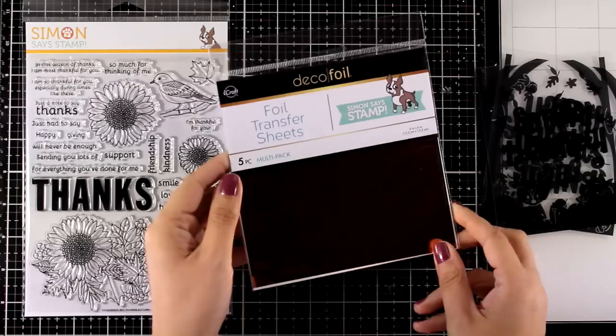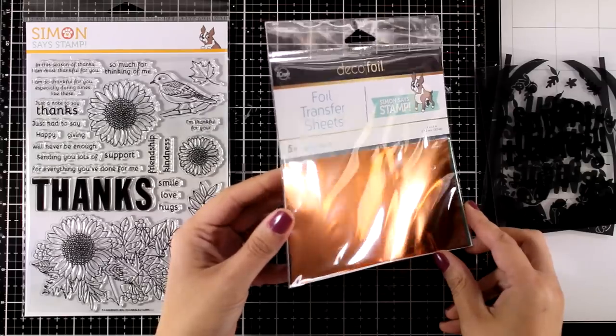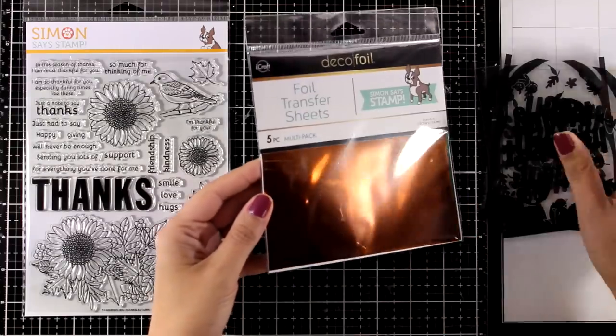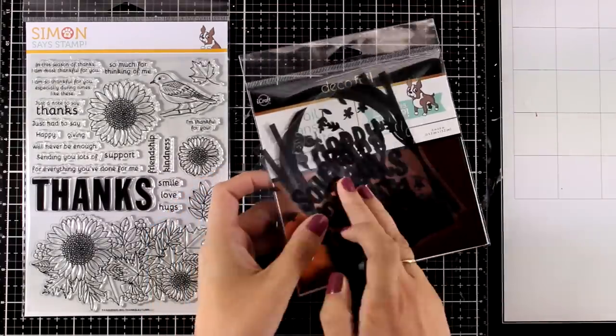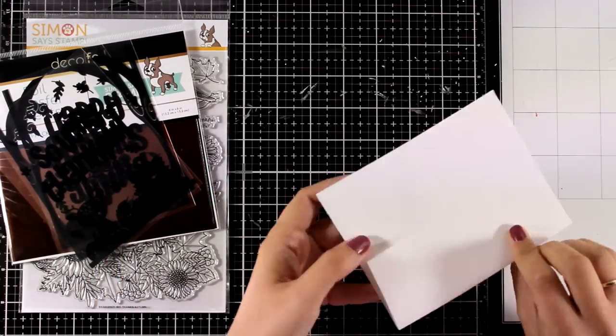These are the deco foil that is included. A package of five deco foils inside in a lovely copper color. You just place it on top of the acetate, and then you run it through your laminator. And it's going to stick where you see the black lines.